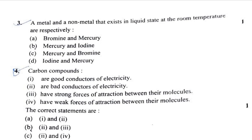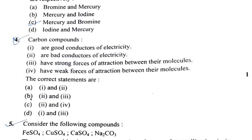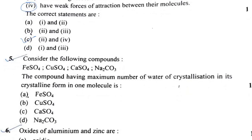Question 4: Carbon compounds are bad conductors of electricity. Good conductors are just one. They have weak forces of attraction between their molecules, so the second and fourth statements can be the answer, which is option C.